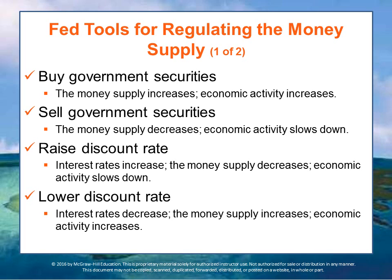One thing the government could do is buy government securities. The Fed can essentially print money and transfer funds into government accounts to buy government securities — that is, government bonds and government treasuries, which are short-term bonds. Alternatively, they can sell government securities from their balance sheet, which means people have to give money to the Fed, reducing the money supply.